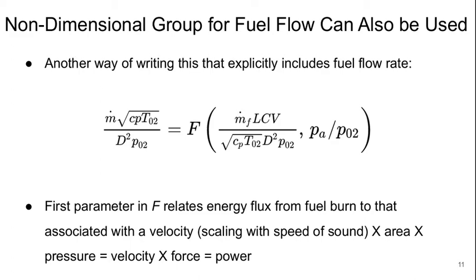Alternatively, instead of T0.4 over T0.2 we could write this in terms of a non-dimensional group that directly includes the fuel flow rate. So we could have a parameter instead that's M.fuel times the calorific value of the fuel over square root of Cp, T0.2, D squared, P0.2. And that way we would directly involve M.f.